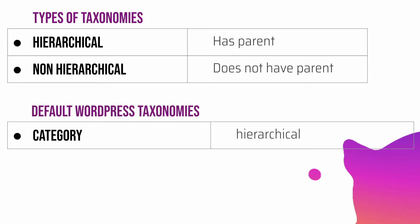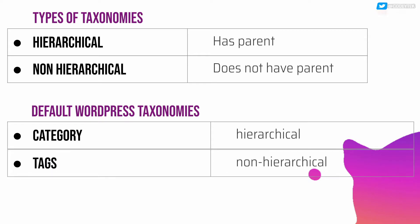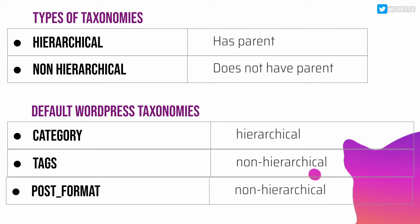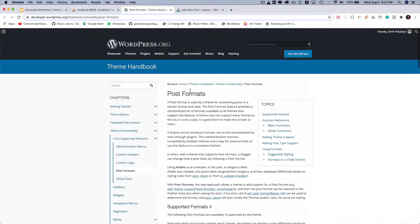So what are the default WordPress taxonomies? Number one is category, which is hierarchical, meaning it has a parent-child relationship. Then there are tags which are non-hierarchical, meaning they do not have children. There is one more which is called post format. I personally wouldn't be using it because in the WordPress Gutenberg editor you already have all the options available.